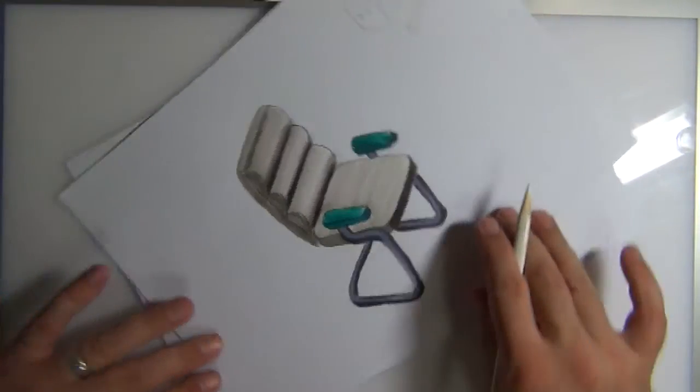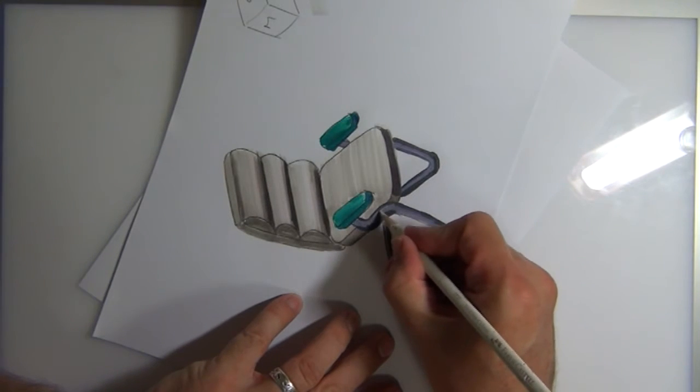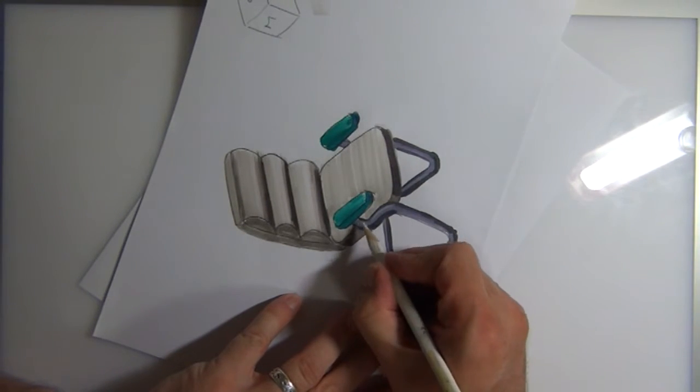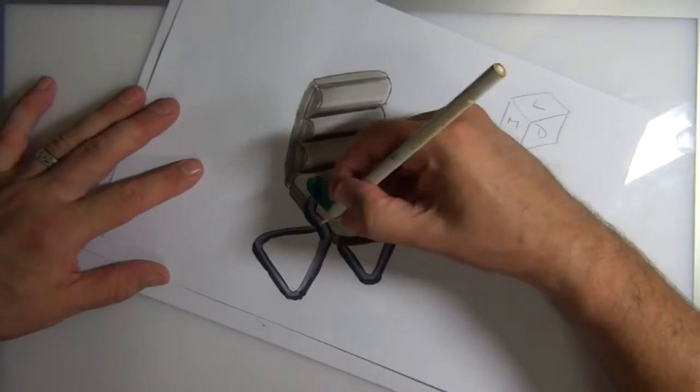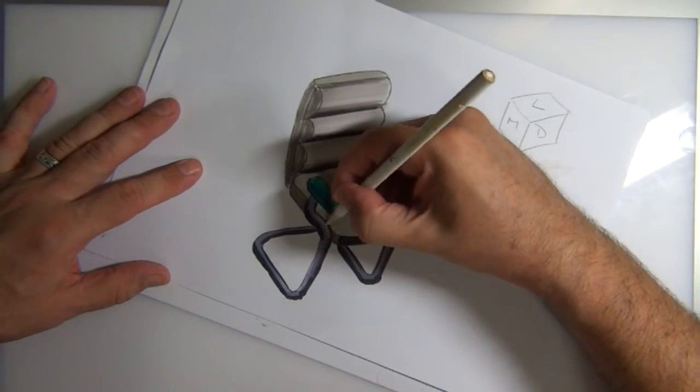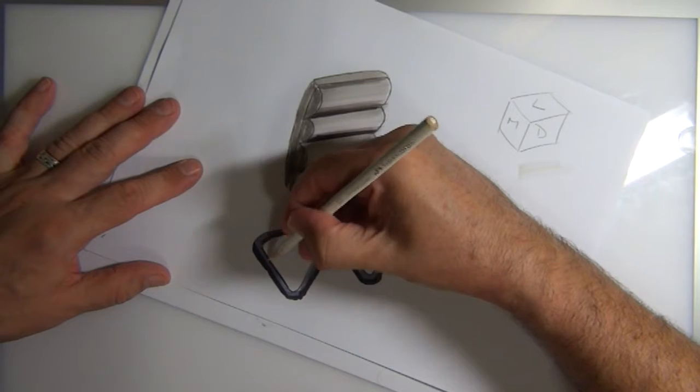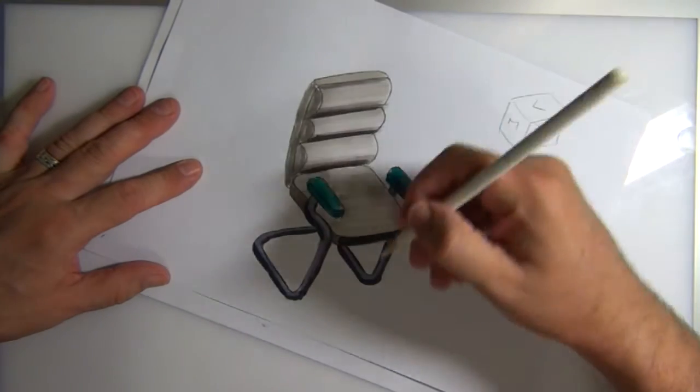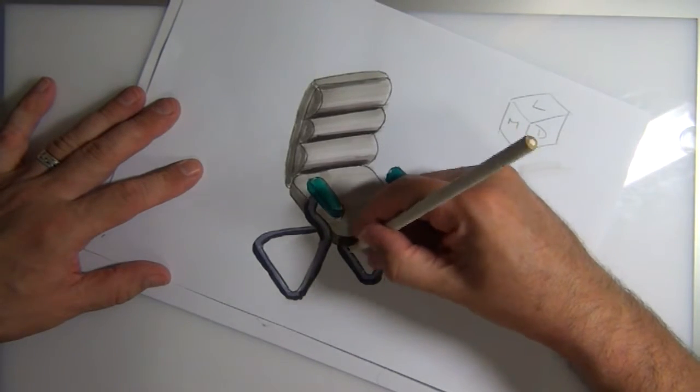And then the white. So the white is going to show me where the metal is going to be the brightest. So definitely on top surfaces, that will be where the light catches it the most up here. But it will also catch along here and along here.